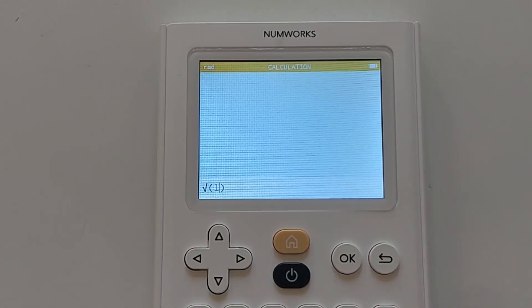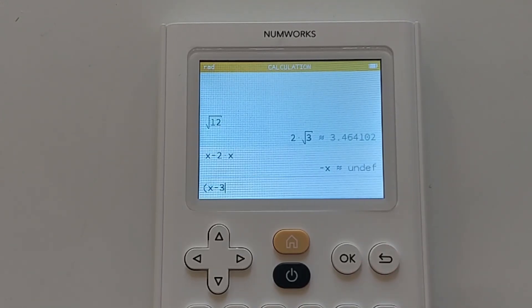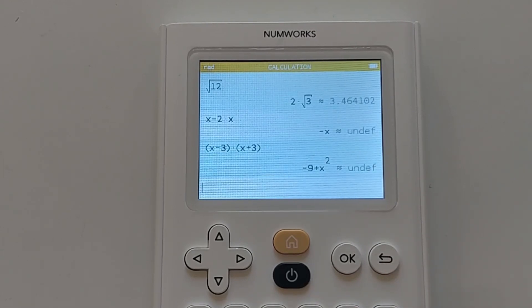One of the many great things about this calculator is the inclusion of a computer algebra system. This essentially means that you can type in expressions such as the square root of x squared, and it will return x instead of the value of x such as on the TI-84 plus CE calculator.